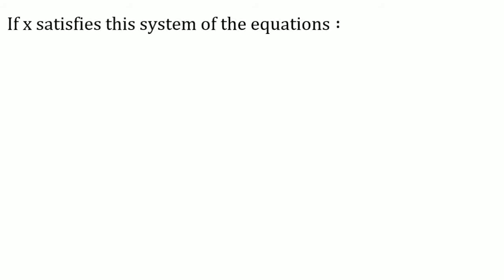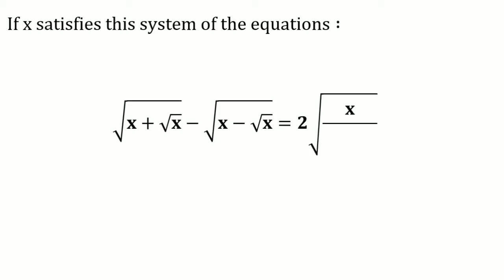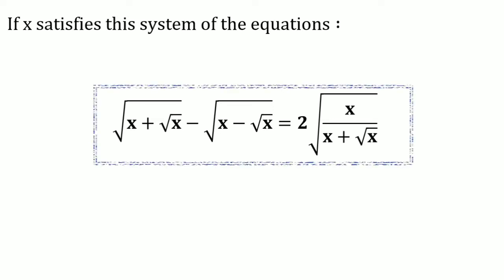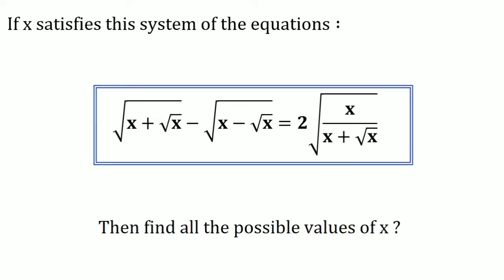Hi everybody. If x satisfies this system of equations — which is the square root of (x + √x) minus the square root of (x − √x) equals 2 times √x divided by (x + √x) — then we have to find all possible values for x. Please give your trial to this question and keep watching for the solution.